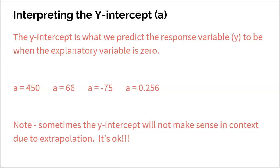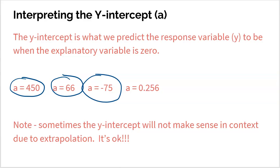Now let's do the same thing with the y-intercept. The y-intercept — the a value — is what we predict the response variable y to be when the explanatory variable is 0. If the y-intercept is 450, we say: I predict the response variable to be 450 units when the explanatory variable is 0. If it's 66, I predict y to be 66 when x is 0. If it's negative 75, I predict y to be negative 75 when x is 0. The a value tells us what we predict y to be when x is 0.